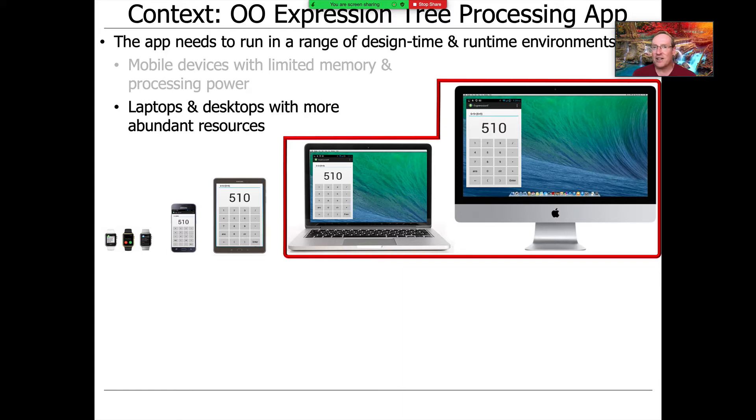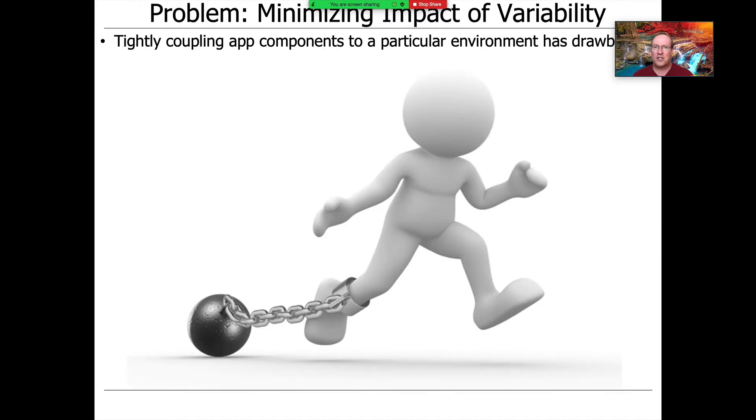Conversely, there are also other runtime environments like laptops, desktops, servers, or cloud environments that have abundant resources. In those contexts, we might want to be more space consumptive if we can make things run faster or more scalably. The point is there's no one-size-fits-all solution, and trying to do that has a lot of drawbacks.